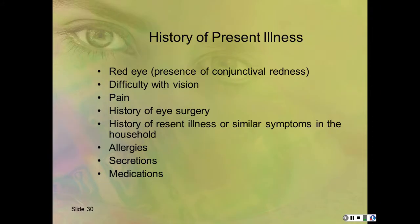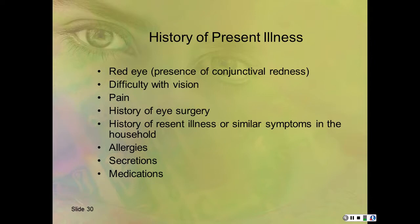Let's review the history we need to ask. Have they had red eyes? If so, what kind of discharge? Was there difficulty with vision or pain? History of eye surgery? Any other illnesses like an upper respiratory illness? Any allergies? Are their eyes itching or discharging? Any secretions, and what medications are they taking?